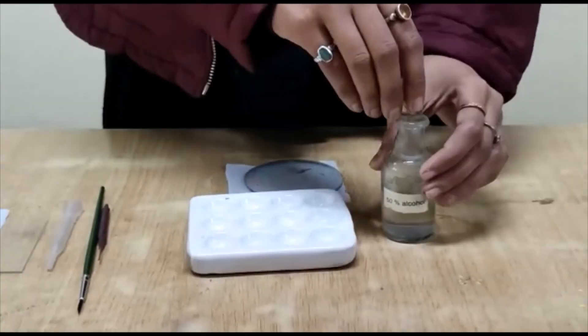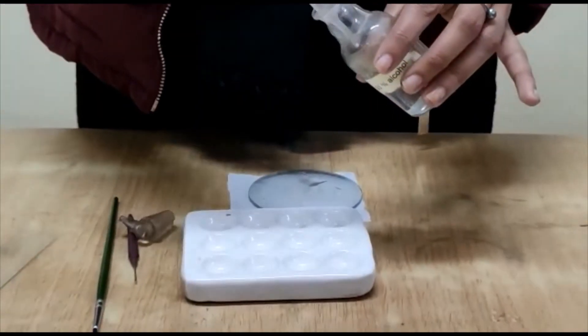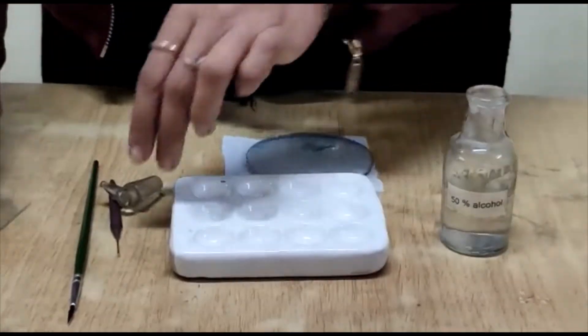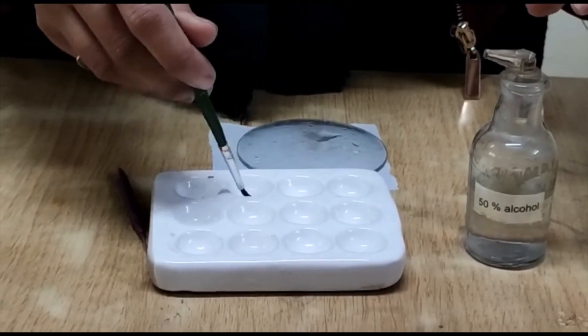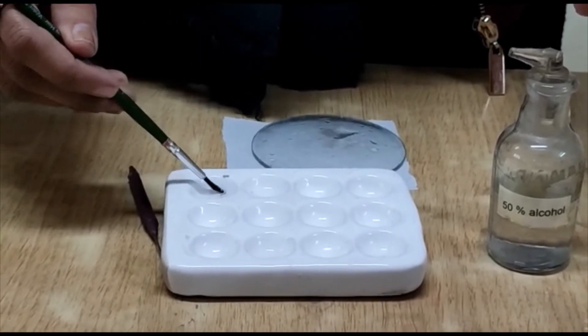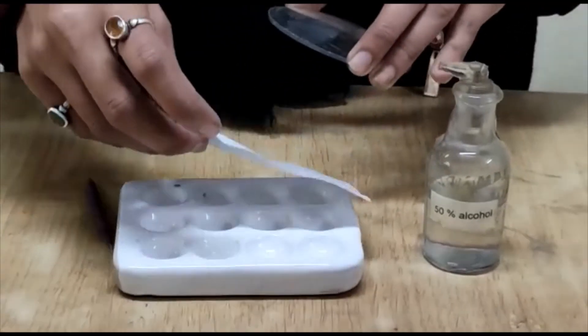After 5 minutes, now we take 50% alcohol in next chamber of our staining tray and transfer the gemmules into the 50% alcohol. Again, cover it and wait for another 5 minutes.